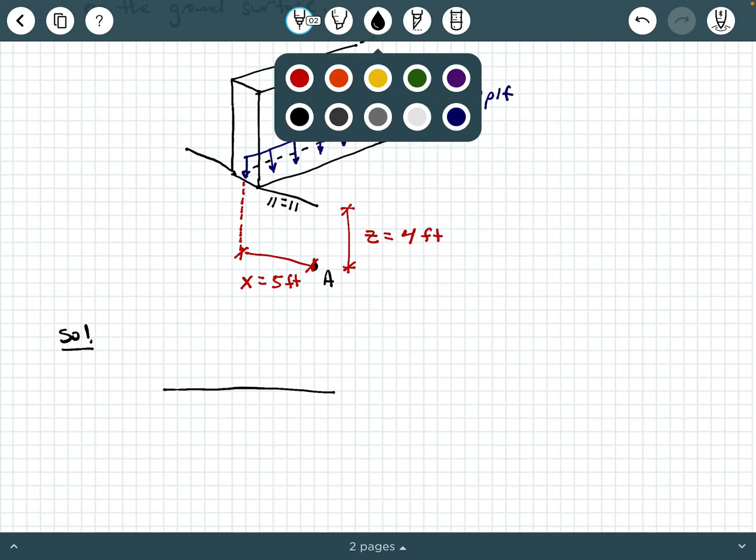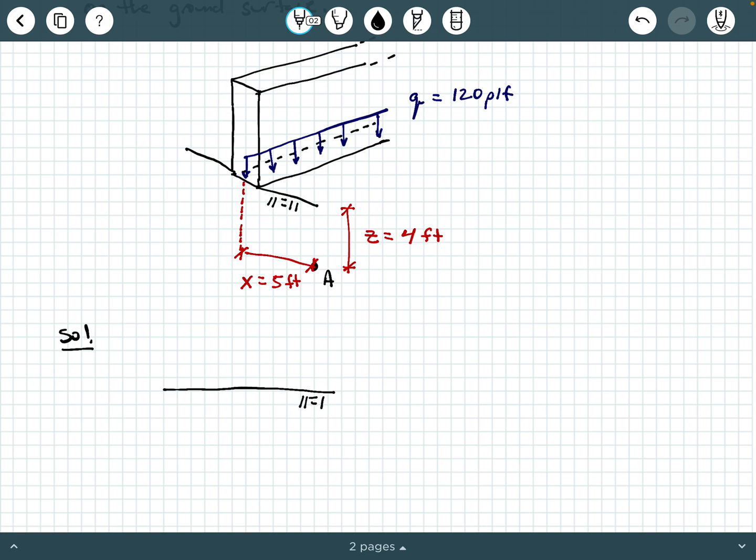So here I'm going to show our ground surface, and I'm going to show the line load right here. This is Q equals 120 PLF. And in this two-dimensional view, what direction is that line load extending? Well, it's extending in and out of the screen at us.